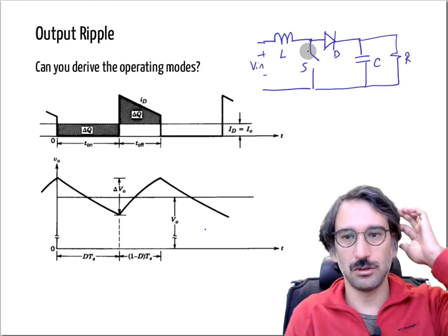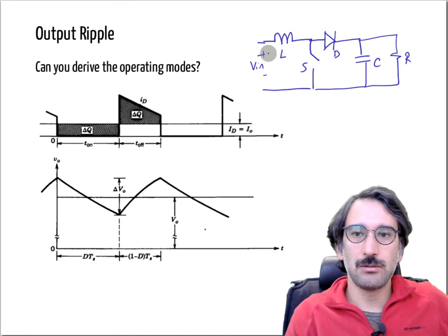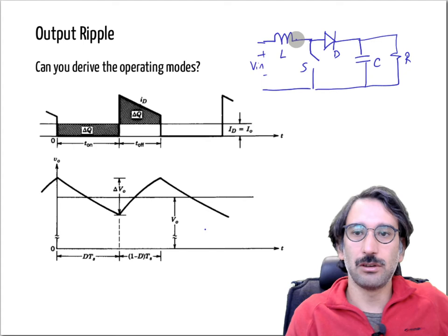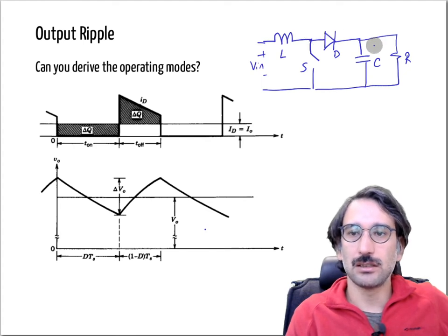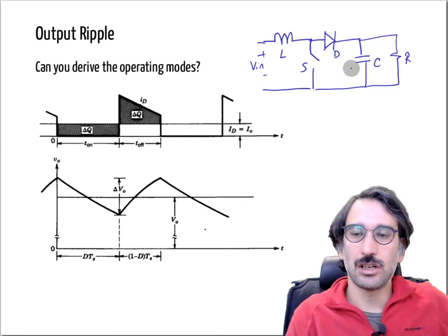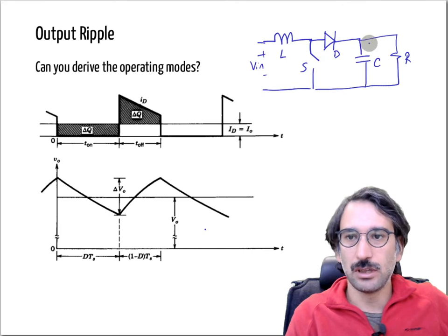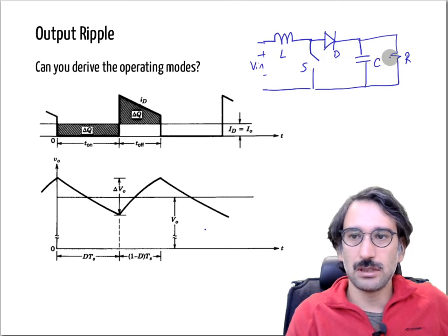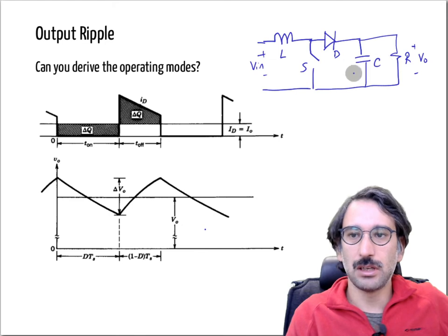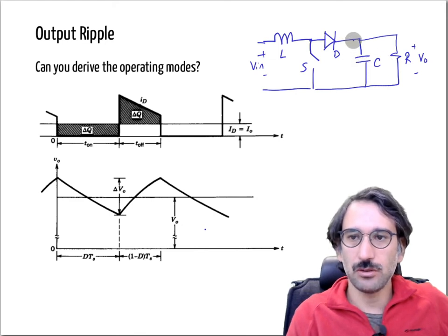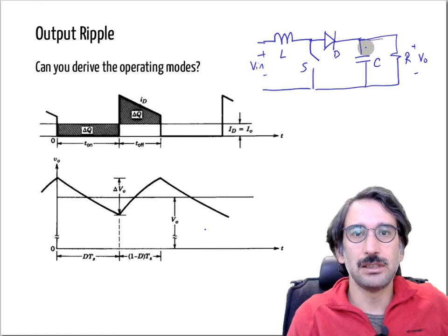When we close the switch, we charge the inductor. Then we open the switch, and the inductor has only one path to go — it flows through the diode and charges the capacitor. To find the output voltage ripple and how that voltage changes, we will use the same approach we used with the buck converter.